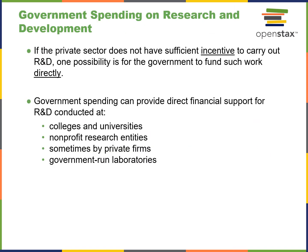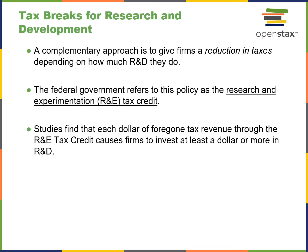The private sector does not usually have sufficient incentive to carry out R&D on its own, but if the government steps in and subsidizes it, that begins to encourage businesses to get involved. Colleges, universities, and nonprofits are two primary locations where research is done, followed by government-run labs, and sometimes private firms are enlisted to help. Another incentive is tax breaks for research and development — probably one of the most popular tools. A research tax credit causes firms to invest at least a dollar or more in R&D and can be incorporated into a government plan using tax incentives.